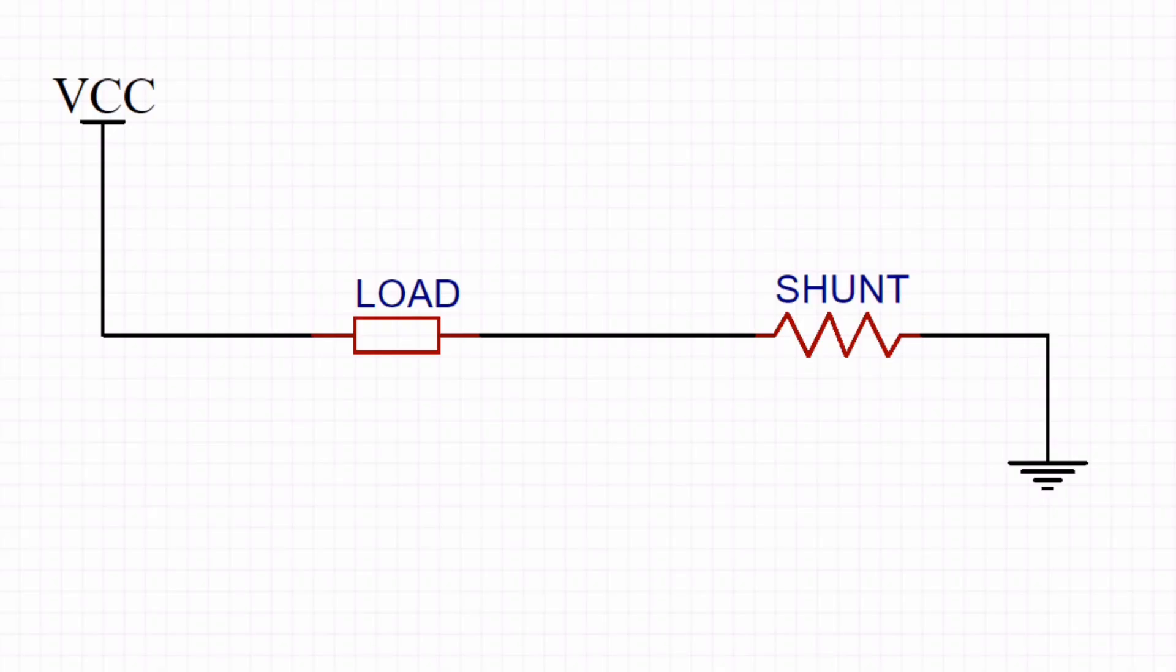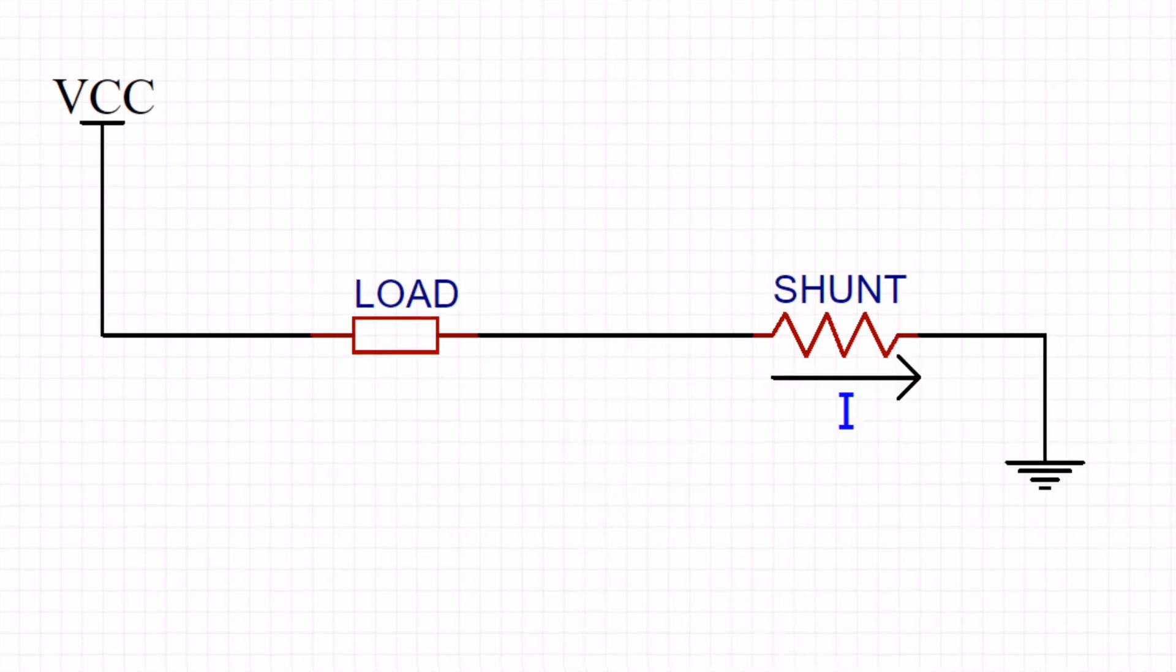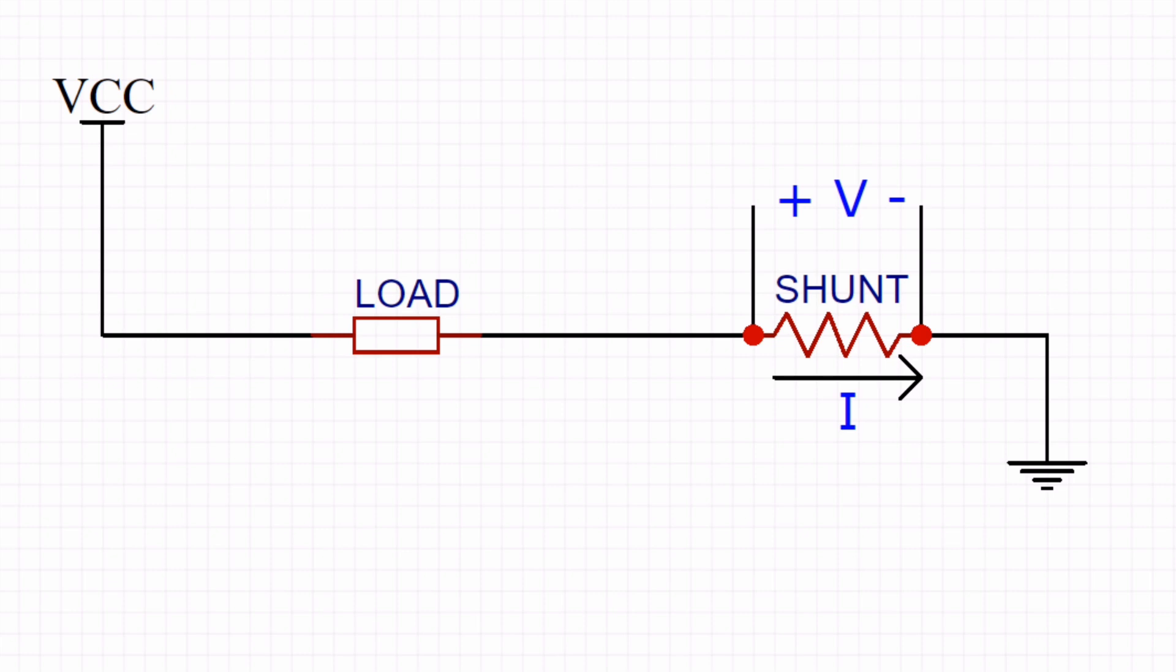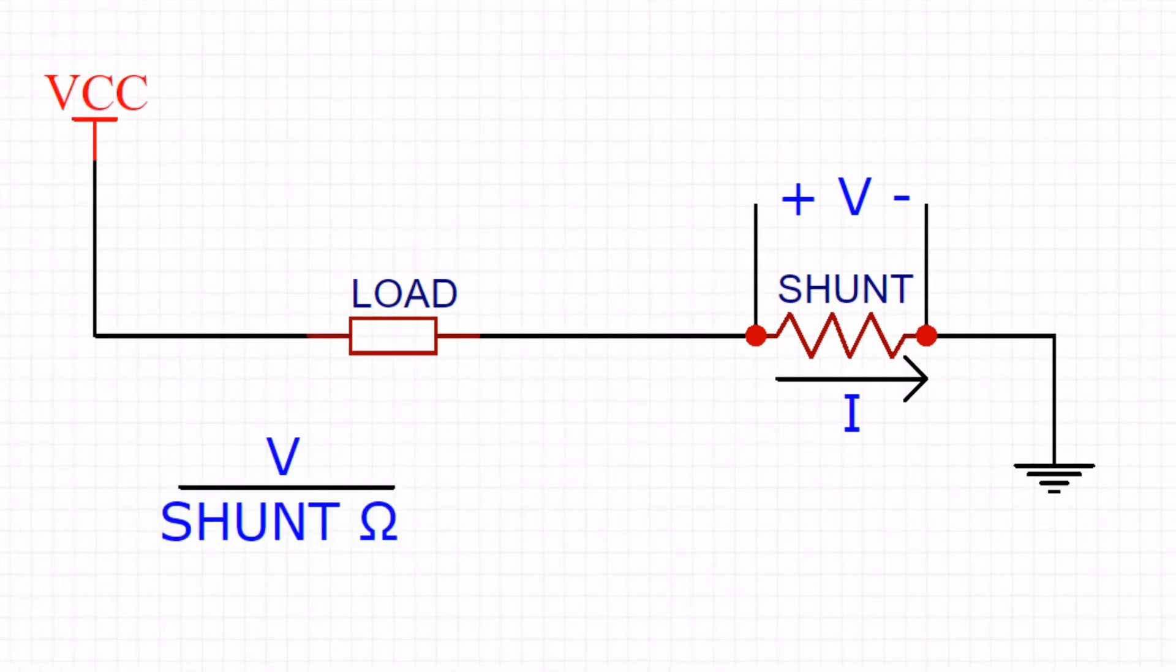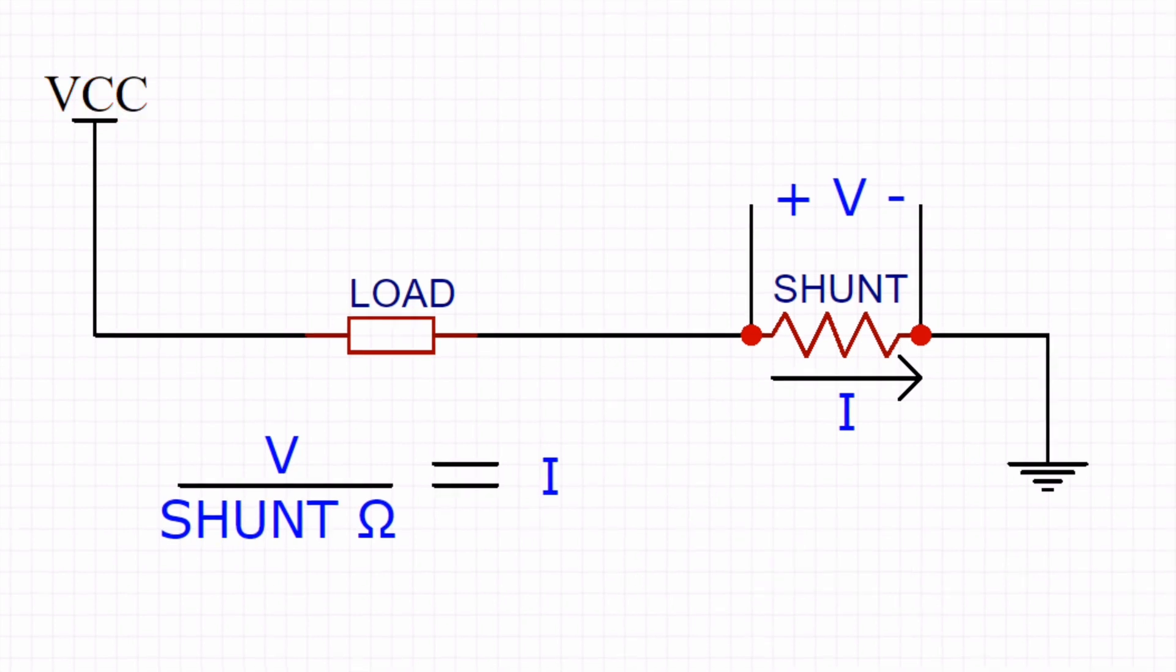The easiest way to measure current is with a low-side shunt resistor. When current flows through a resistor, a voltage is dropped across the resistance. This voltage can then be measured and gives a direct representation of the current flowing through the resistor.